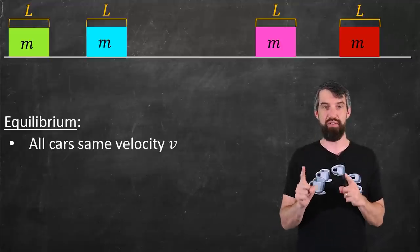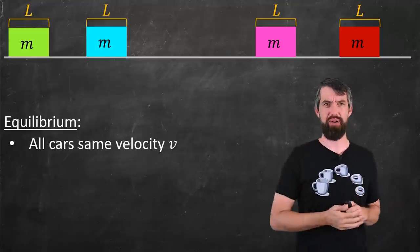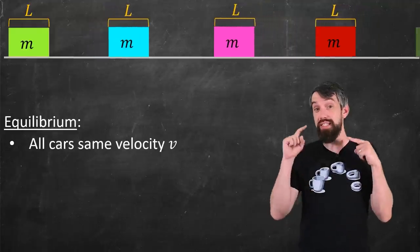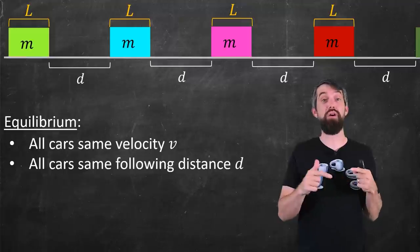For equilibrium, all cars have to be the same velocity. And second, I'm not going to allow a scenario where they have different distances between them. I'm going to insist that they all have the same distance between them, and I'm going to call that distance d. When my cars are at equilibrium, I can speak to notions like density.